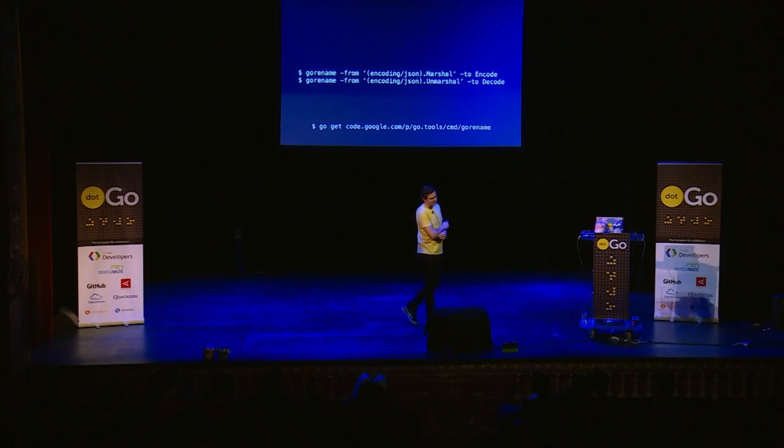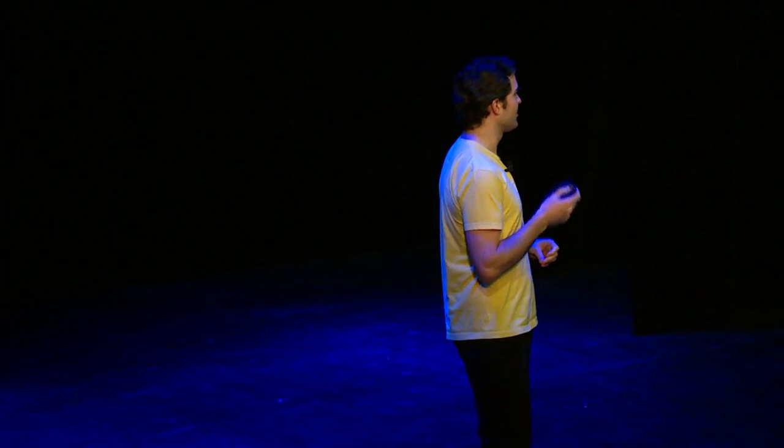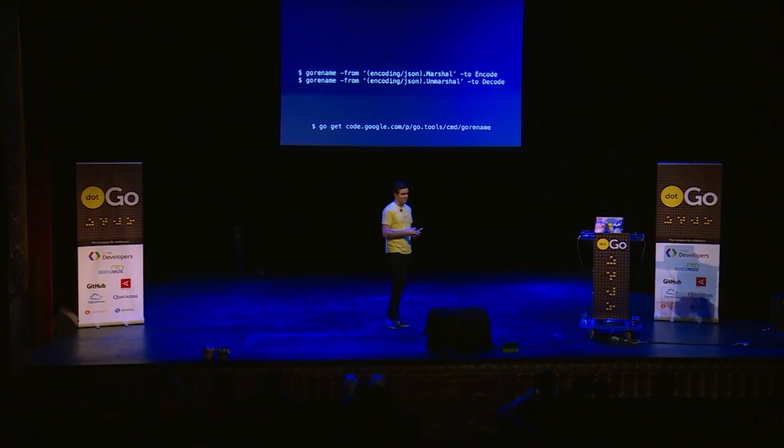Also, because the code was already in gofmt style, any of gofix's changes in the diffs were purely semantic — there were no whitespace changes — and that's of critical importance. Since then, a lot more static analysis tools have been developed for analyzing Go source code, its types, and execution. Now we have gorename, a type-aware renaming tool for Go source. These two lines would rename the json.Marshal and Unmarshal functions to encode and decode. Because it's type-aware and workspace-aware, it will rename those types not just in the json package but also in all of your packages that use those packages in your workspace. It's available in the Go tools repository.